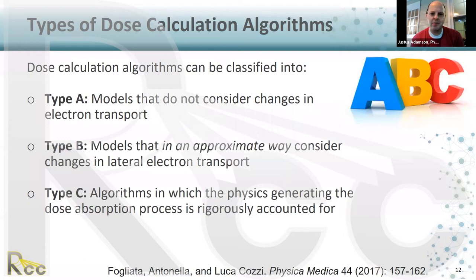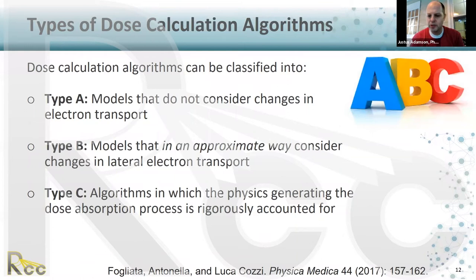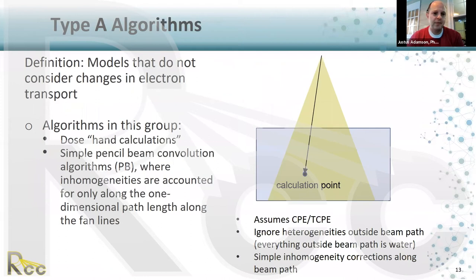Dose calculation algorithms can be classified into three types: A, B, and C. Type A algorithms do not consider changes in electron transport. Type B algorithms consider changes in lateral electron transport in an approximate way. Type C algorithms are those in which the physics generating the dose absorption process is rigorously accounted for.